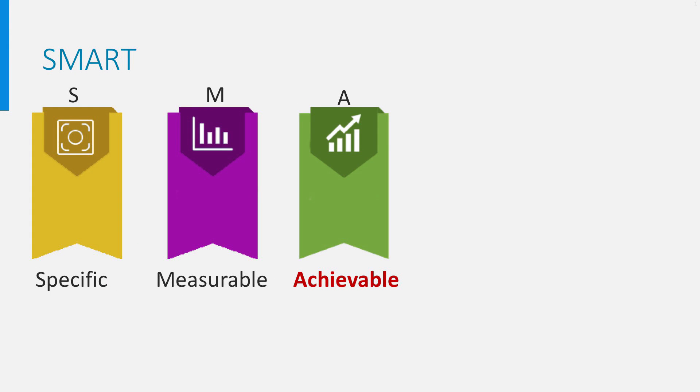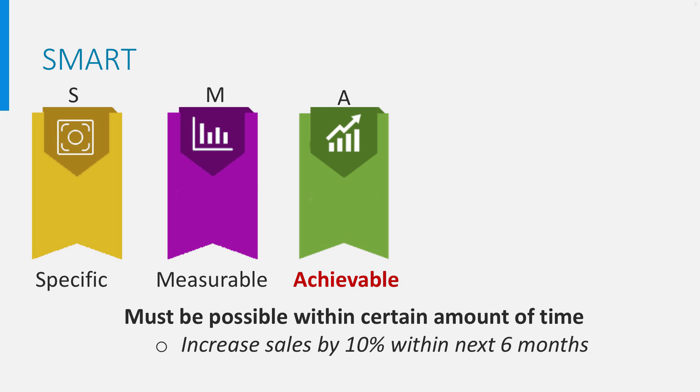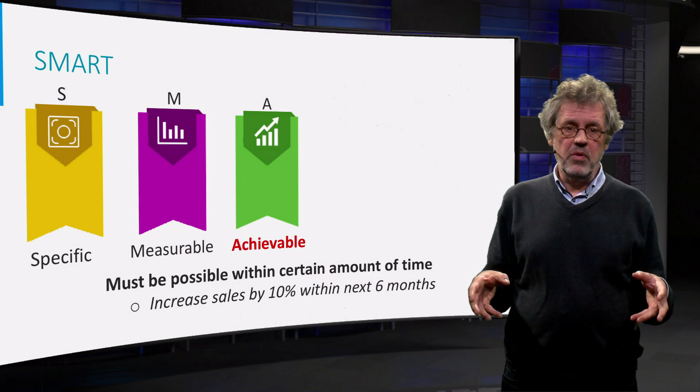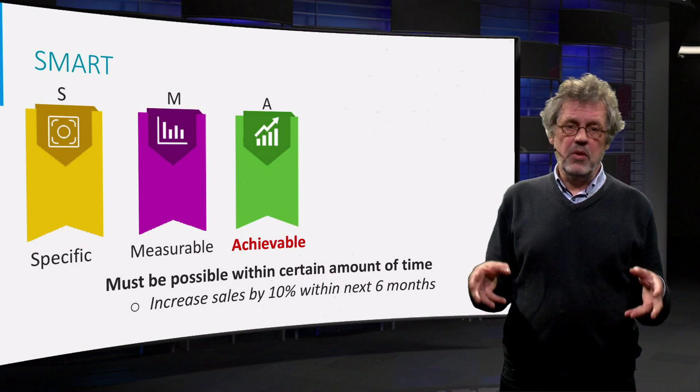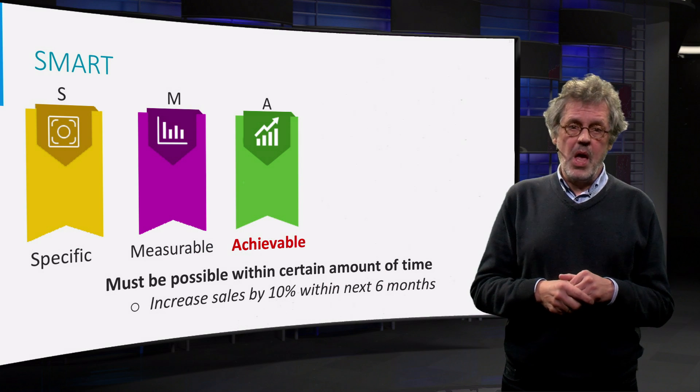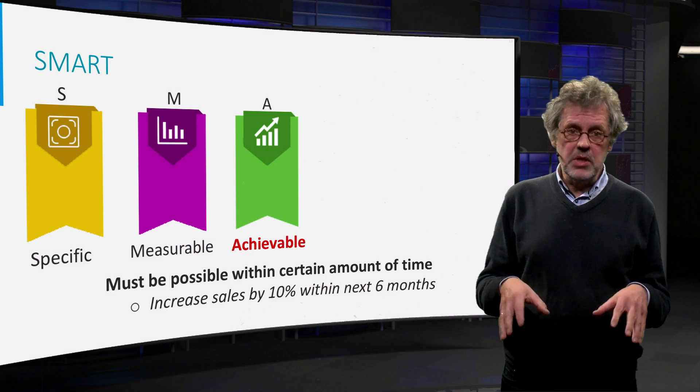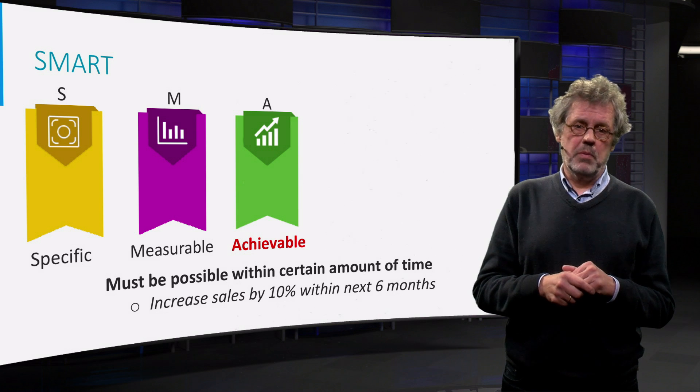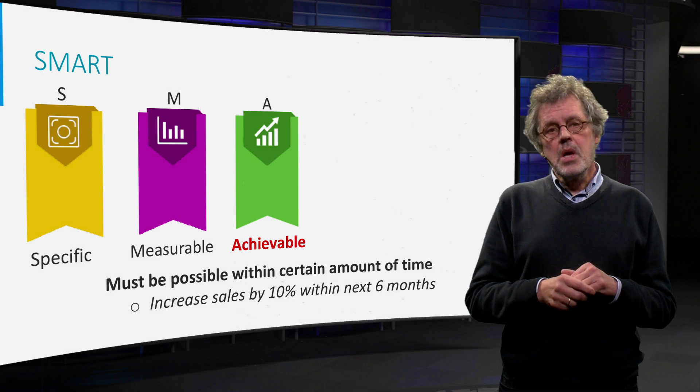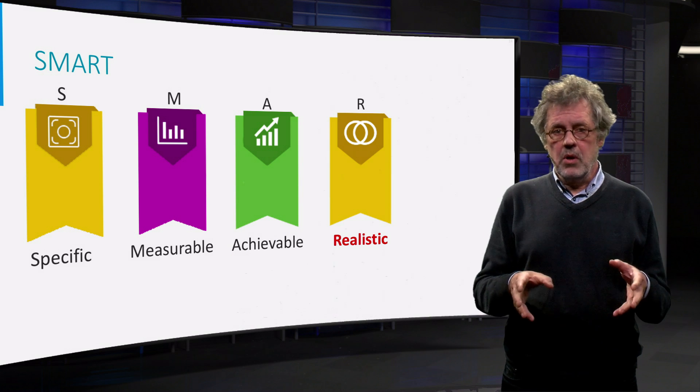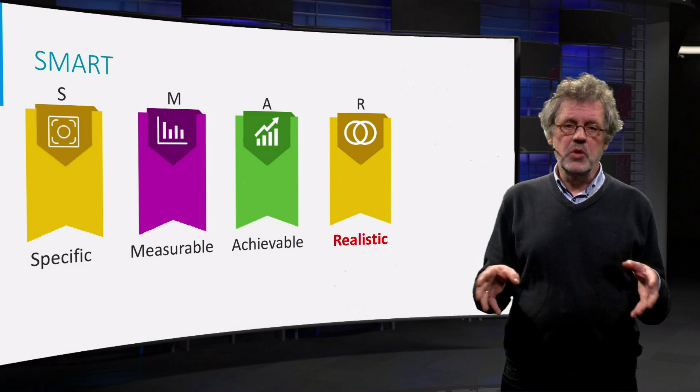Achievable. Nothing is more demotivating than goals you cannot achieve. Achievable means that your goals are possible to accomplish in a certain period in time. For instance, if you want an increase in sales, a 10% increase within 6 months in a new market would be considered achievable. However, in a well-established, mature market this will be almost impossible.